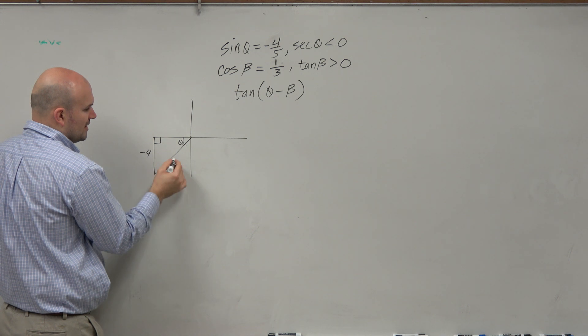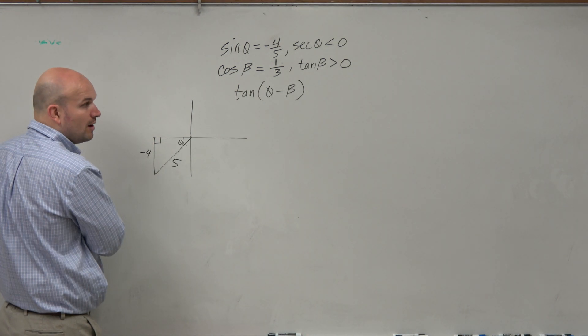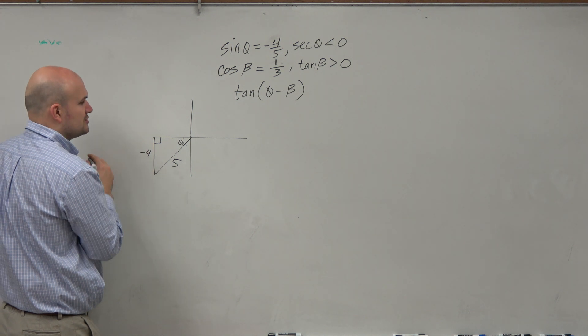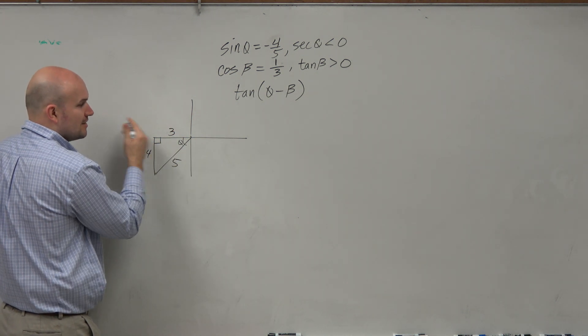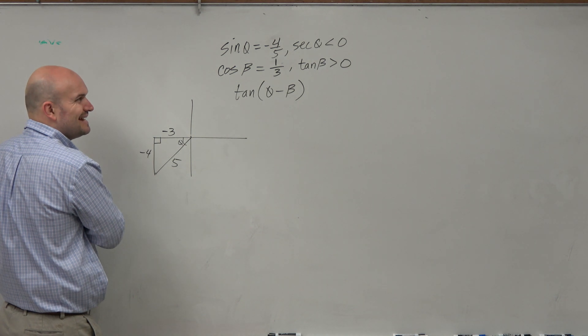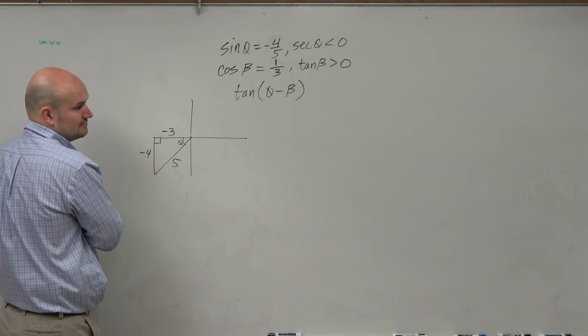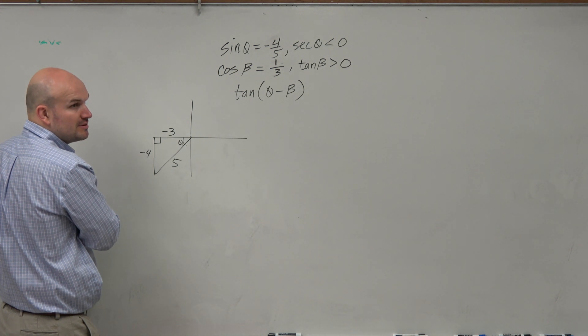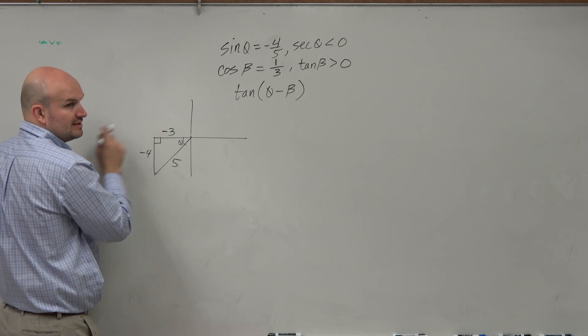So we have negative 4 and 5. We could use the Pythagorean theorem if we wanted to, or we can remember that this is a Pythagorean triple, and that's a 3. But notice that since it's in the third quadrant, that is also a negative 3. Be careful with that. That was a lot of mistakes that people made. If you guys remember the quiz and test we took, people forgot those signs.